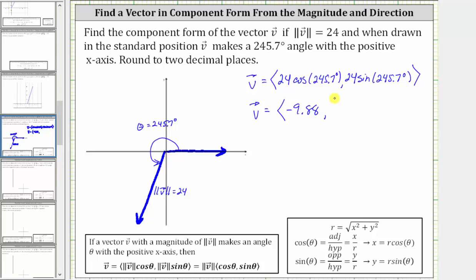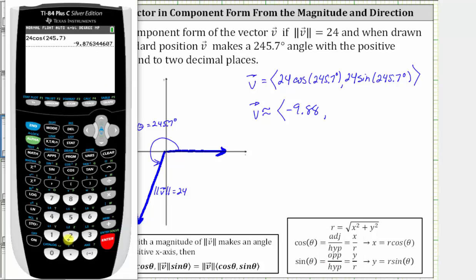Now we'll find the y-component. Let's also change the equal sign to an approximation symbol, since we are approximating the x and y-components. The y-component is equal to 24 times sine 245.7 degrees. Notice we have a three in the third decimal place, so we round down to negative 21.87.